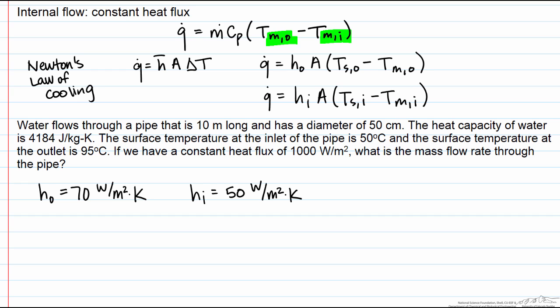We can use a form of Newton's law of cooling to find our mean temperatures. Since we have a heat flux, we don't include our area. So at the outlet, this is just the surface temperature minus the mean temperature. We rewrite that as T_s,o minus our flux divided by our heat transfer coefficient. We can rewrite it the exact same way at the inlet.